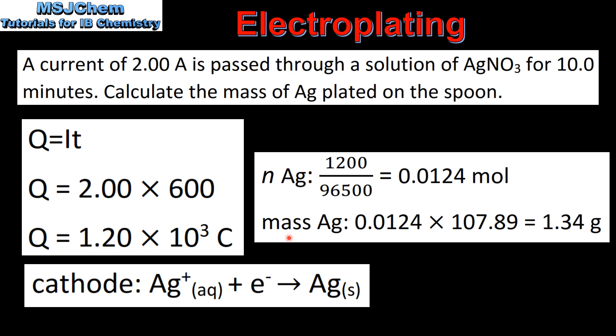Next we will calculate the mass of silver plated. That's the number of moles of silver multiplied by the molar mass of silver to give us 1.34 grams.